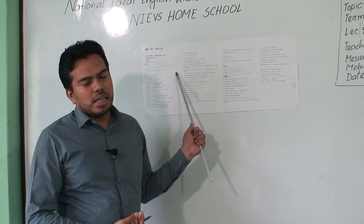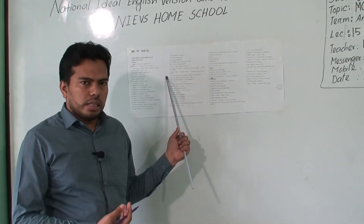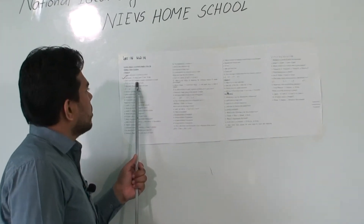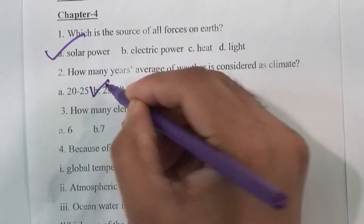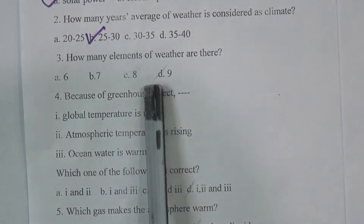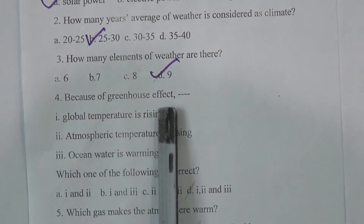How many elements of weather are there? There are nine elements of weather. Because of the greenhouse effect, what happens? Global temperature is rising, atmospheric temperature is also rising, and ocean water is warming.